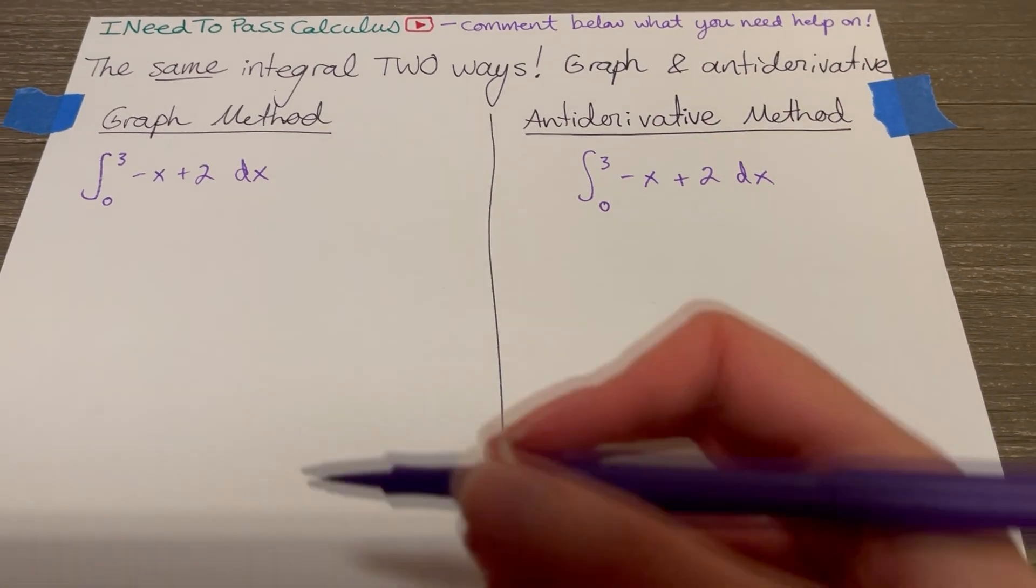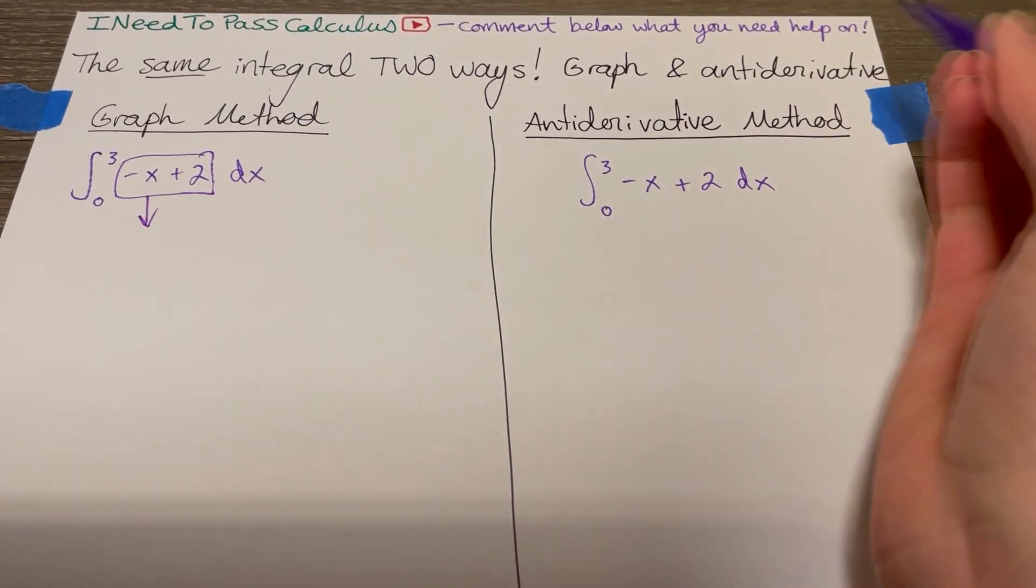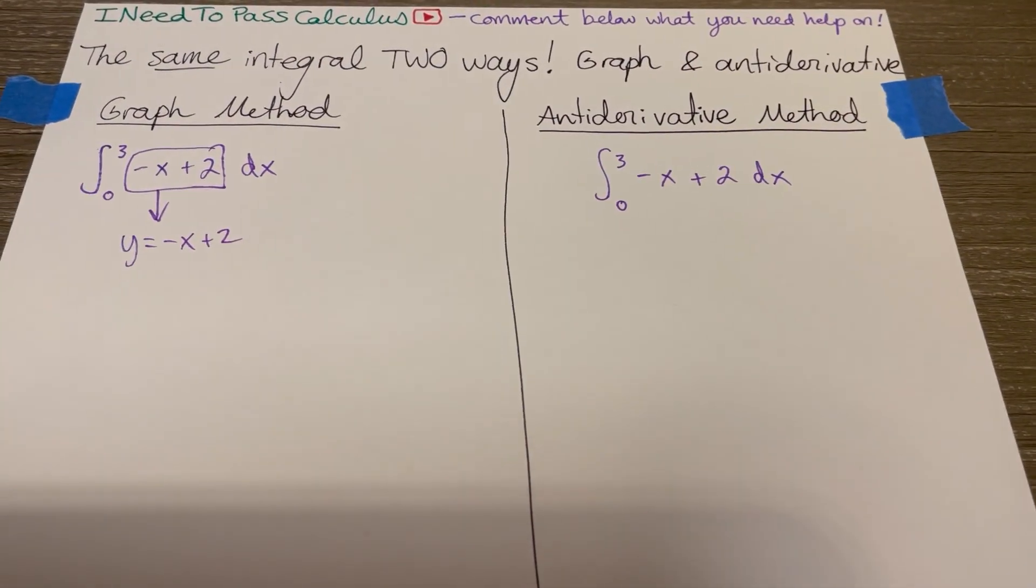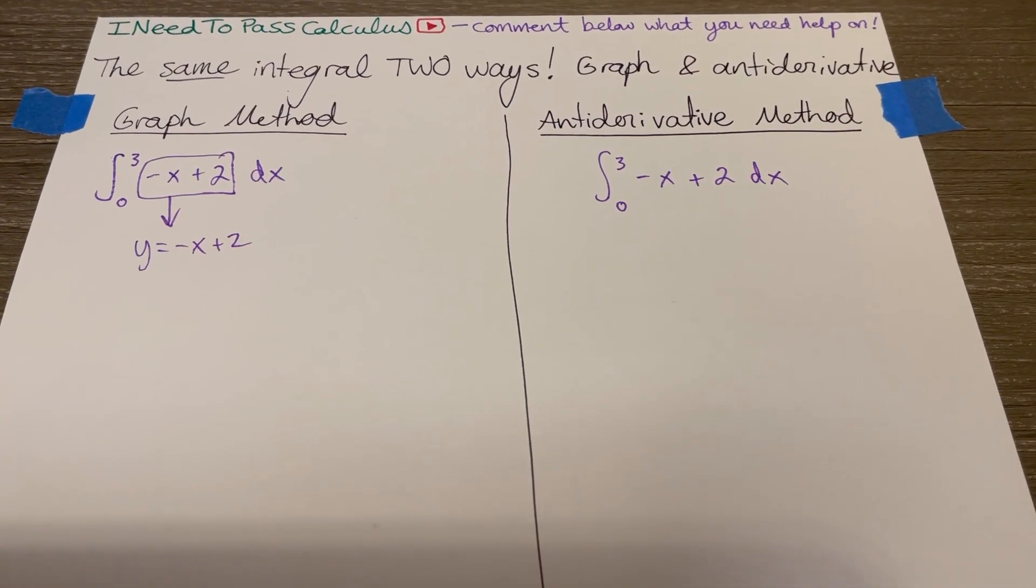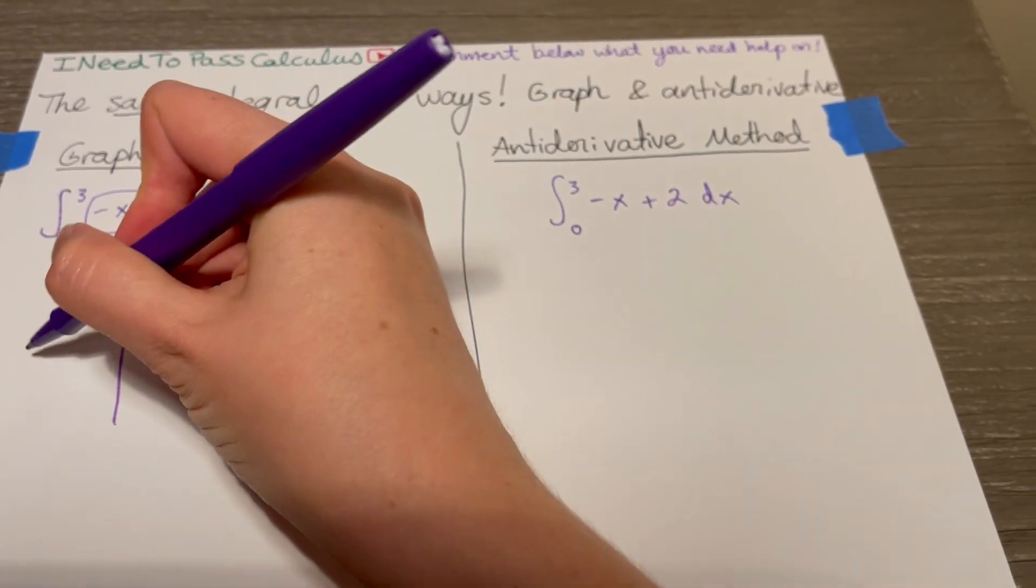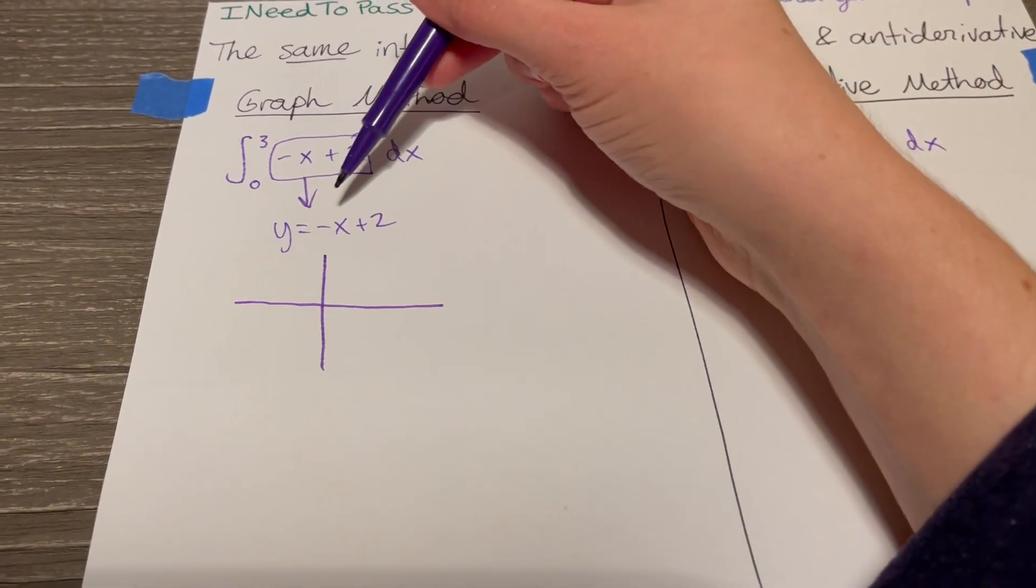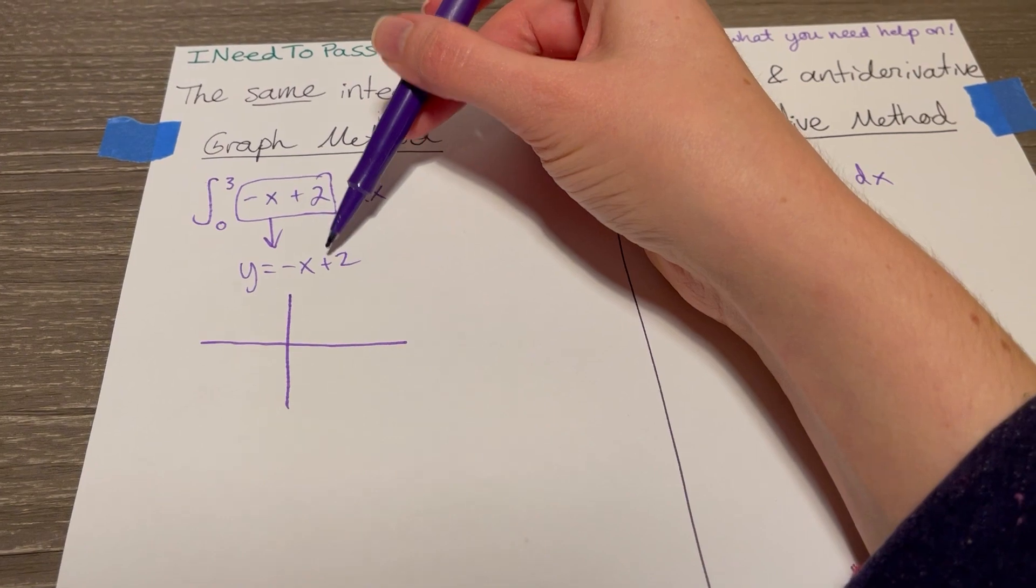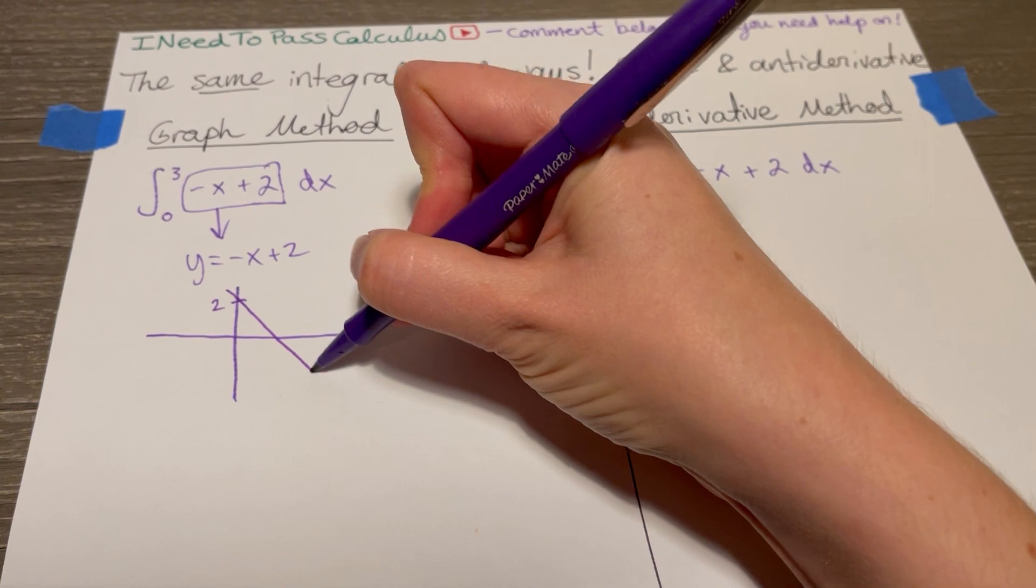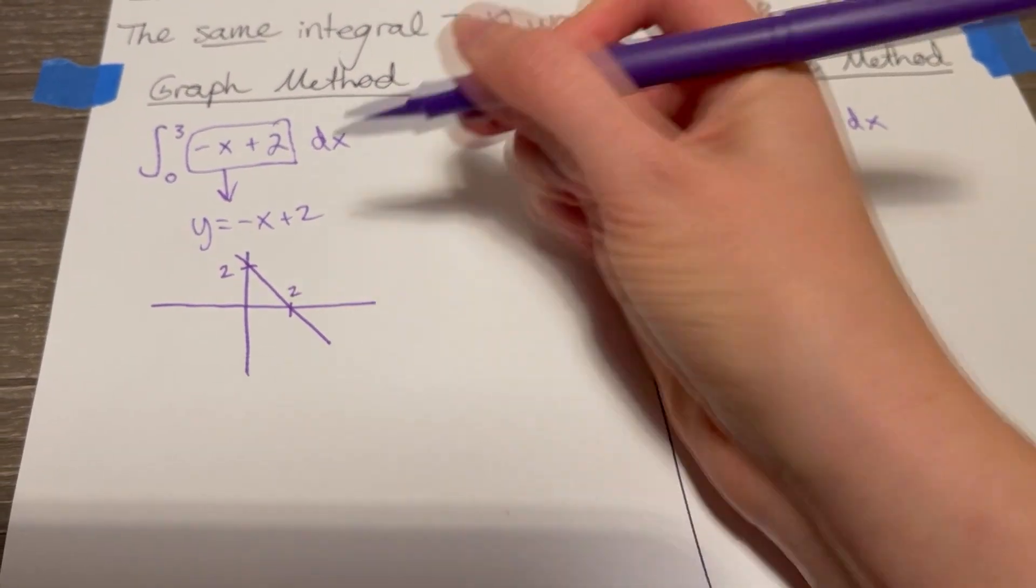So the graph method works for problems where the integrand, which is the part inside the integral, if you look at it as a function, if it's something you know how to graph and creates easy geometry shapes, then it's a great candidate for the graph method. So negative x plus two, well that's just a linear function with slope negative one and y-intercept positive two. So it crosses up here at positive two, the downward slope of negative one, so it crosses the x-axis at positive two.